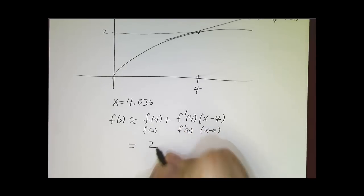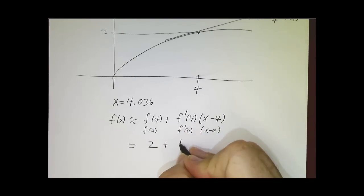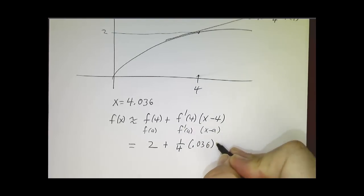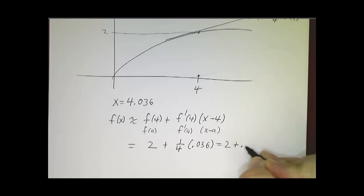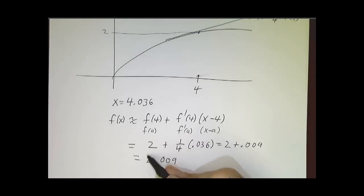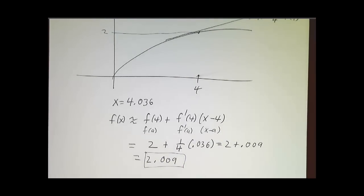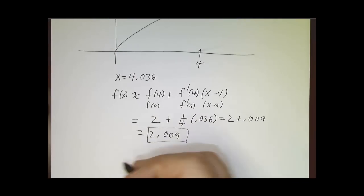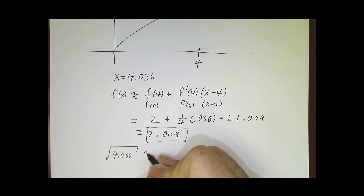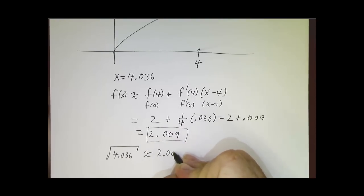And now we just plug in. f of four is two, f prime of four is a quarter, x minus four is 0.036, so that's two plus 0.009, which is 2.009. So I claim that the square root of 4.036 is approximately 2.009.